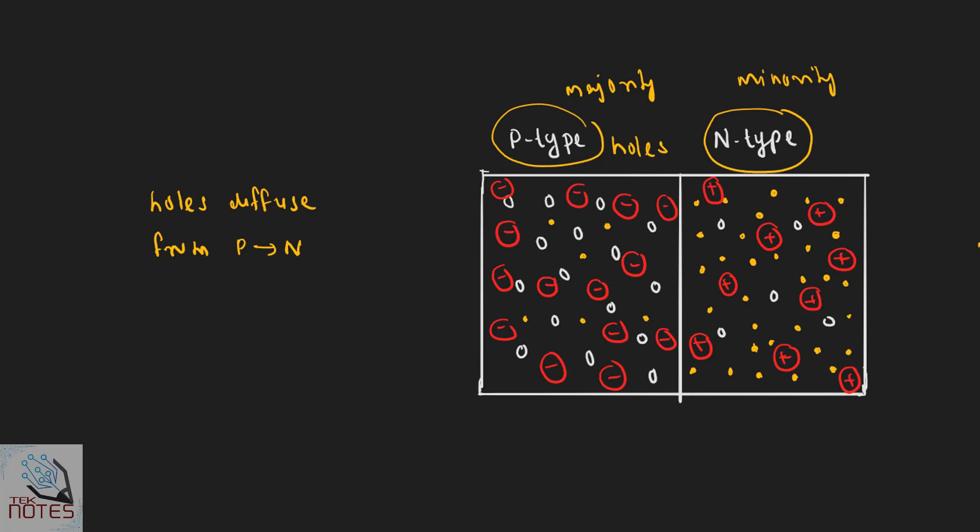For electrons: in N-type, electrons are the majority carriers, and in P-type, electrons are the minority carriers.